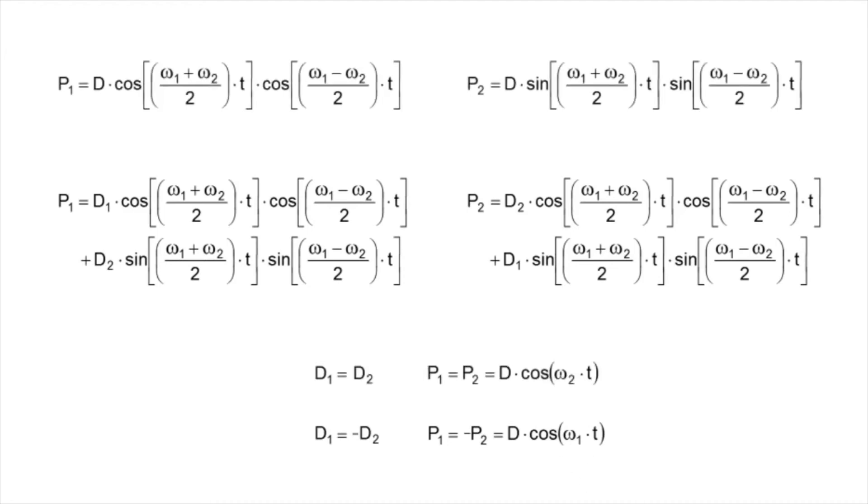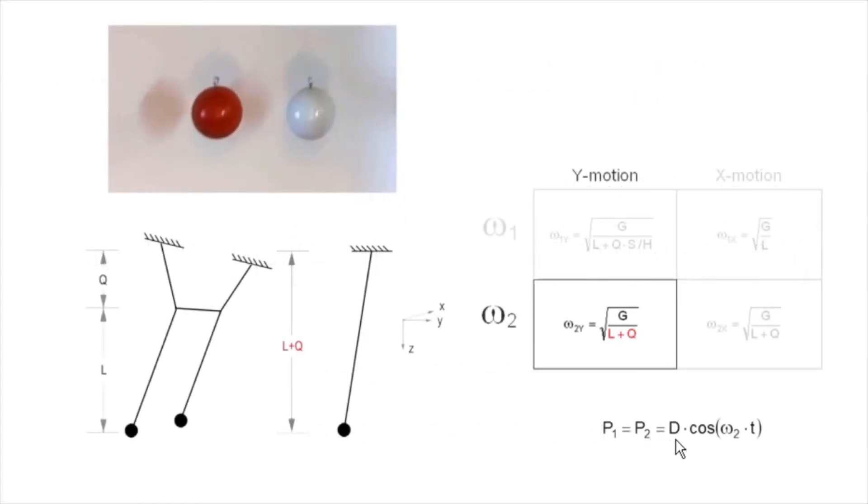As formal development of these two equations is a bit more complicated than would be convenient for our lecture format, we will again defer to the papers linked in the show notes below. We have asserted that identical initial displacements of both pendulums' weights results in a simple harmonic oscillation at the metafrequency omega-2. This allows us to directly observe the omega-2 for y-motion must be that of a simple pendulum of length l plus q.